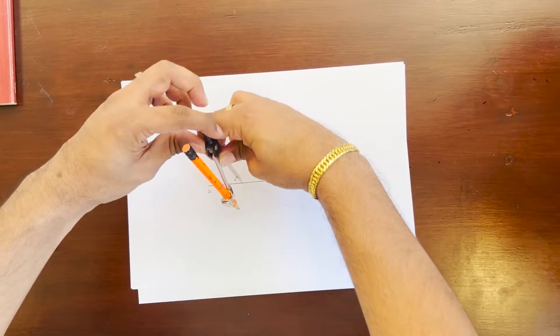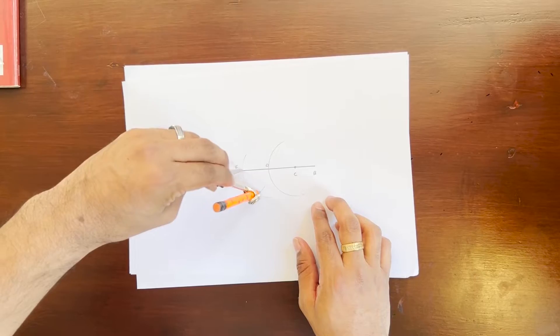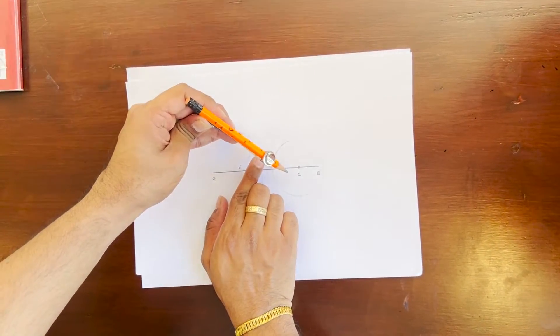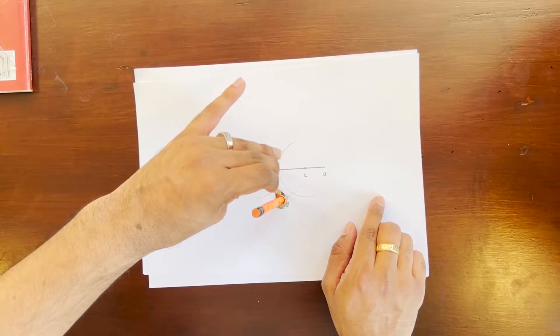Keeping the compass at point E, I am going to draw an arc below that intersects these two arcs. Keeping it at point E, intersect this arc, and let's keep it at point D and intersect this arc right here.